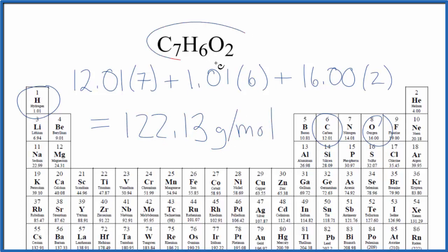That means if we had one mole of benzoic acid, it would have a mass of 122.13 grams.